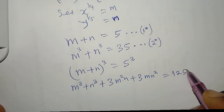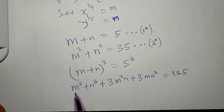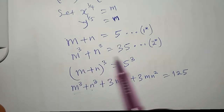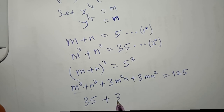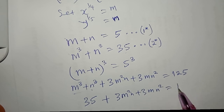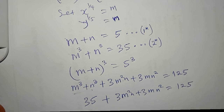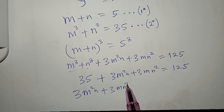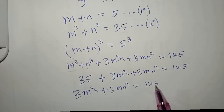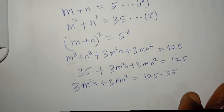Notice that m³ + n³ is the same as equation 2-star and equals 35, so I replace it with 35. That leaves 35 + 3m²n + 3mn² = 125. Moving 35 to the right gives 3m²n + 3mn² = 125 − 35 = 90.